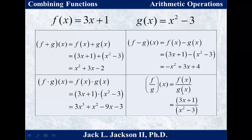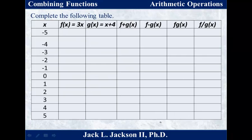f divided by g of x is f of x over g of x, which is just 3x plus 1 over x squared minus 3. There's really not much else we can do with that one, so we leave it as is.